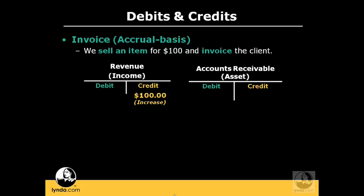Accounts receivable is money that the client owes you — they're going to pay you at a later date, so you keep track of that debt through accounts receivable. Accounts receivable is an asset account, and we want to increase the asset account by $100. If we look at the chart of our T accounts, we can see that asset accounts are increased by debiting them. So we're going to debit our accounts receivable by $100. Our revenue was increased by $100, so we credit it, and accounts receivable was also increased by $100, so we debit it. That's how it's going to sit until the client pays us.